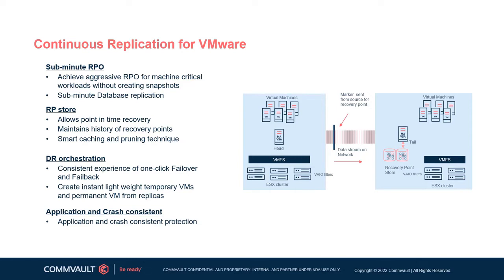It leverages the VMware VIO framework where Commvault inserts its certified filter plugin within the ESXi host. This provides the ability to fork VM block-level changes and replicate them over to a destination location before they are even written to media on the source side, without interrupting or impacting performance. The best part is that it offers the same advanced DR replication group and failover/failback operations that other Commvault replication types do, with advanced controls to orchestrate VM activity all from within a single pane of glass.